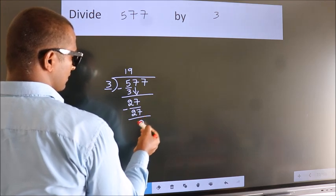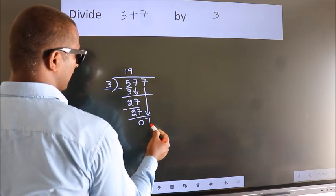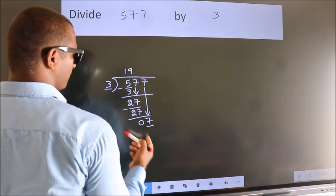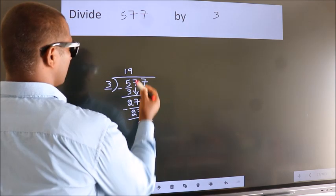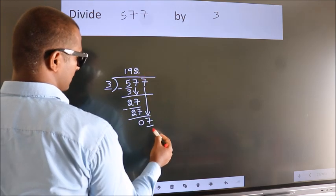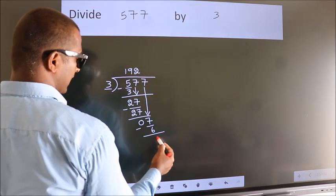After this, bring down the beside number. So, 7 down. So, 7. A number close to 7 in 3 table is 3 twos, 6. Now, we subtract. We get 1.